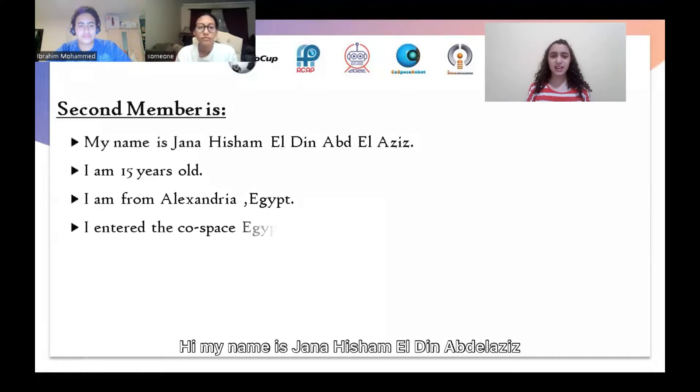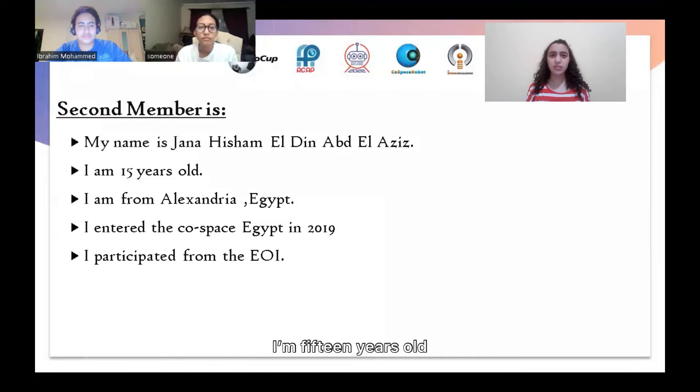Hi, my name is Jenna Shemiddin Abdelaziz. I am 15 years old. My team name is Lennon. I am from Alexandria, Egypt. I entered the co-space in Egypt in 2019. I participated from the EUI.